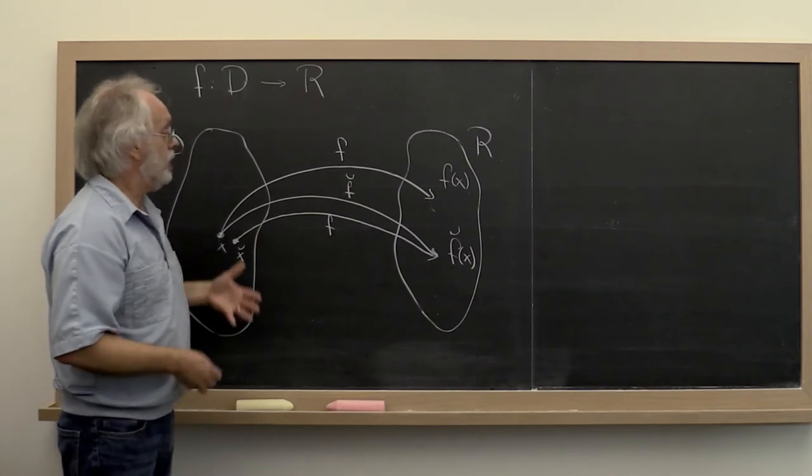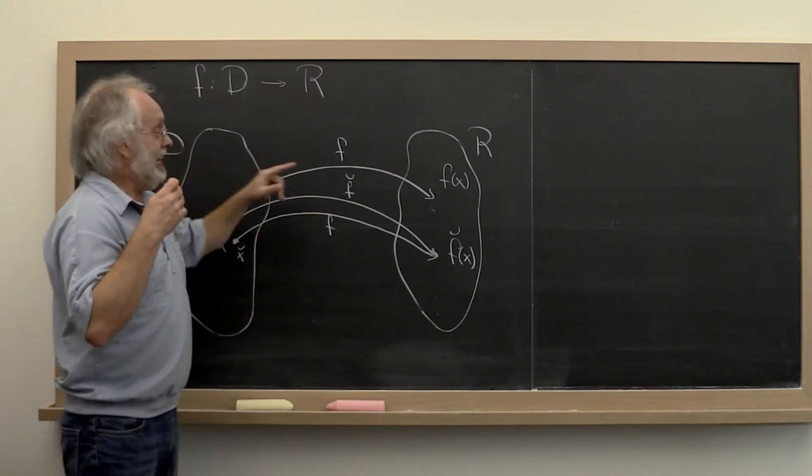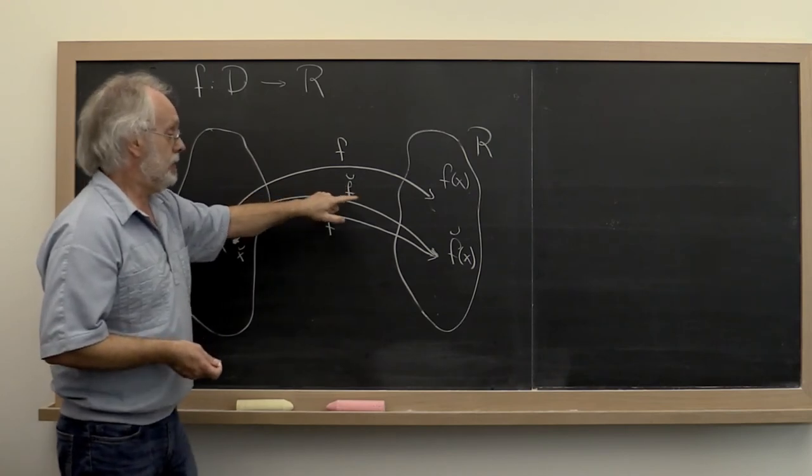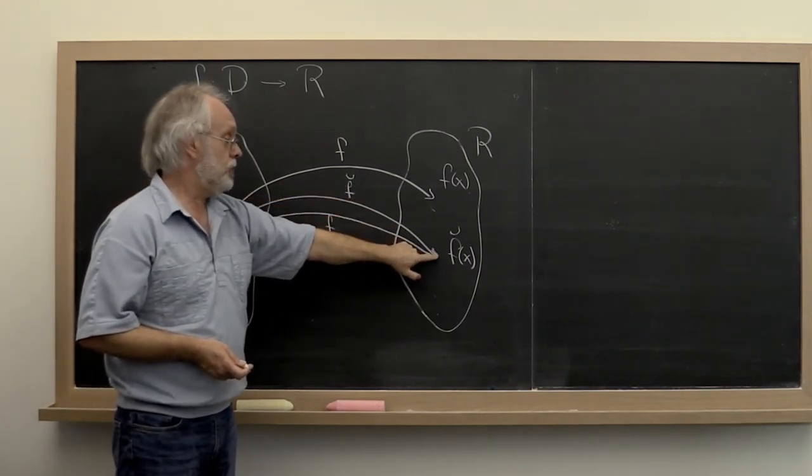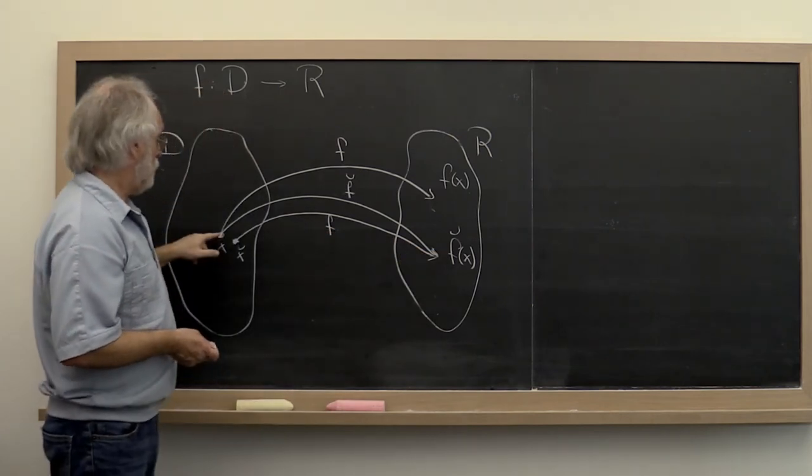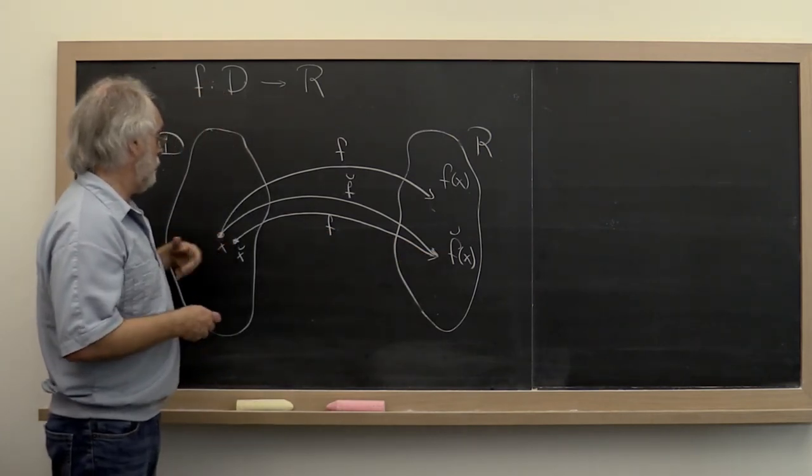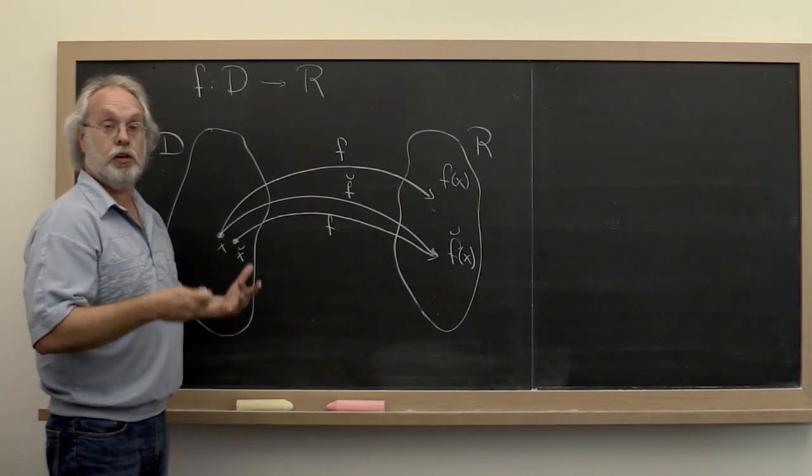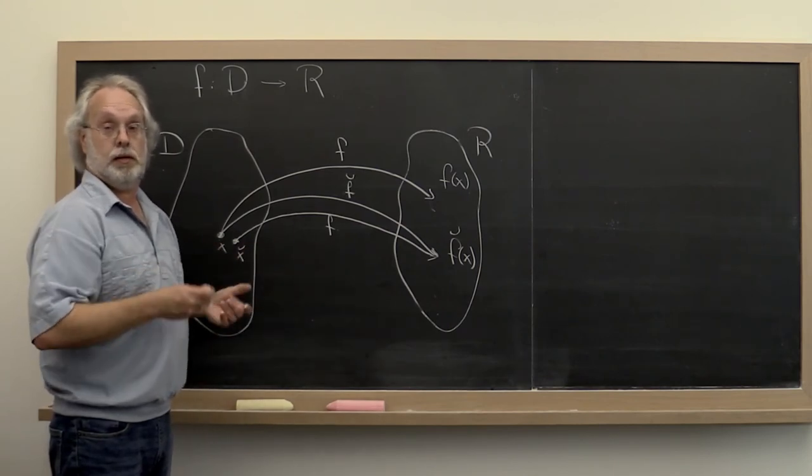So, an implementation that has the property that the result that you compute can be attributed to an input that's close to the input you started with is called a numerically stable algorithm.